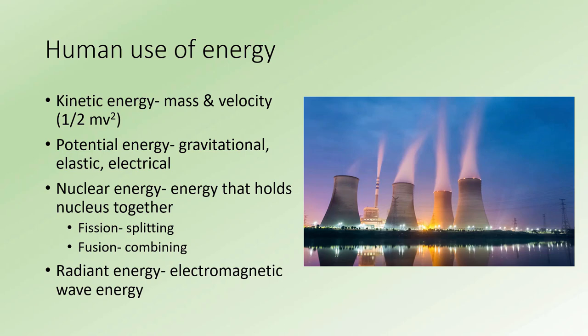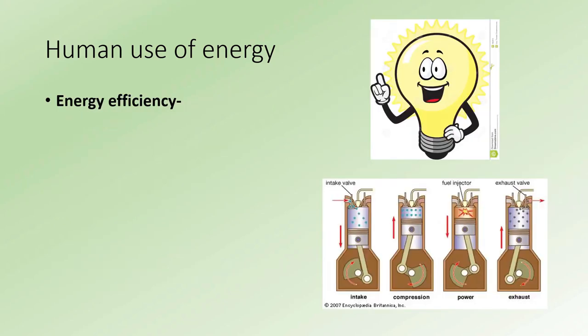Lastly, there's radiant energy. This is electromagnetic wave energy and includes things such as visible light, but also gamma rays, x-rays, alpha waves, beta waves, all that kind of stuff.